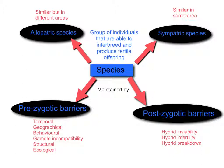A classic example is the hybrid between a horse and a donkey producing a mule — mules are infertile because they cannot produce gametes. This is mainly because horses and donkeys have different chromosome numbers, so in the mule there is an uneven number, meaning meiosis cannot occur correctly. The last post-zygotic barrier is hybrid breakdown: even if a hybrid is fertile in the first generation, over subsequent generations that fertility is lost within a couple of generations.